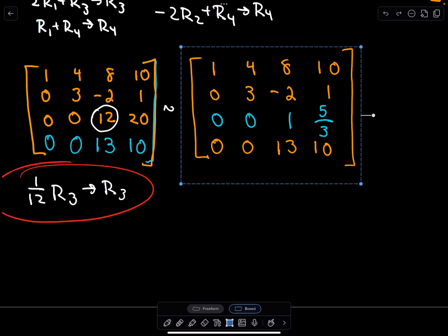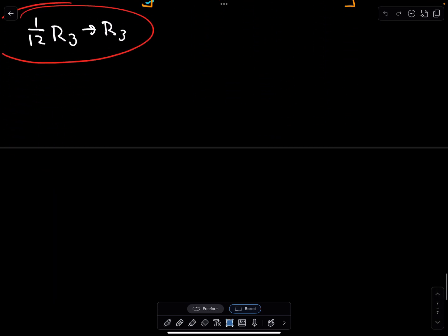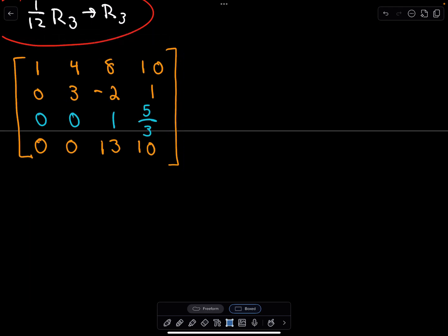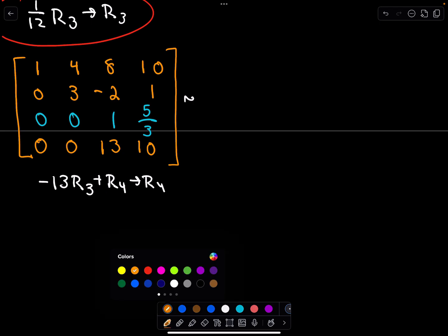I think we're almost there. All I want is this 13 to turn into a 0. I think I can take -13 times the third row and add to that my fourth row to make my new fourth row. And then I think we're almost finito.